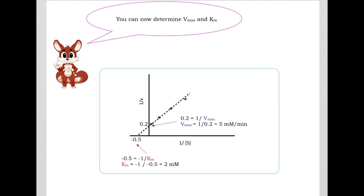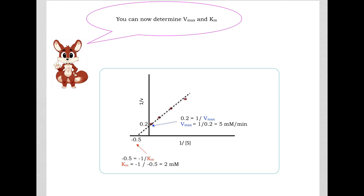Now we can determine VMAX and KM. The y-intercept is 0.2, which equals 1 divided by VMAX, so VMAX comes out to be 5 millimolar per minute. The x-intercept is minus 0.5, which equals minus 1 over KM, so KM comes out to be 2 millimolar. That is how we determine VMAX and KM from the Lineweaver-Burk plot.